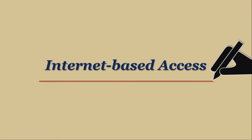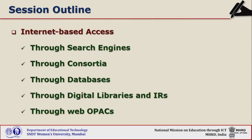Internet-based access. Besides manual access to library and paper-based books, journals, and reference material, various documents are available on the internet through different internet-based sources like encyclopedias, catalogs, journals, theses, databases, institutional repositories, and web OPACs. So through all these you can have internet-based access to information.